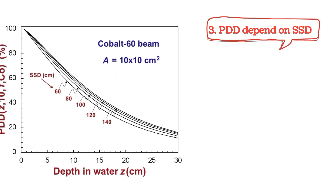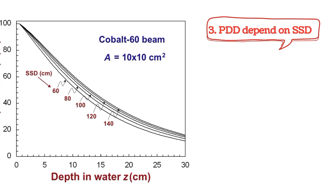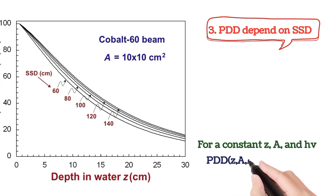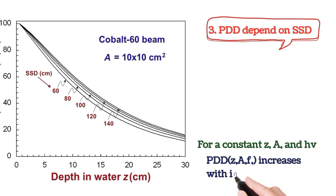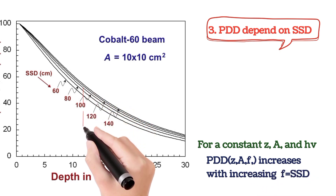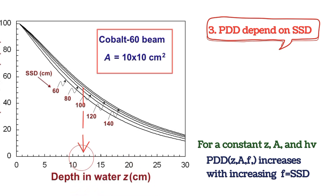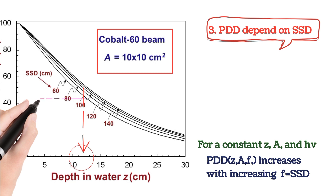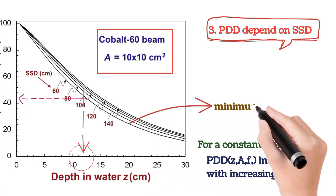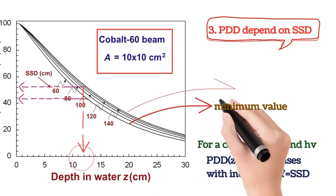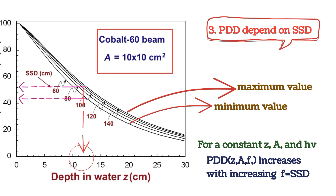We see how PDD depends on SSD. For a constant depth, field size, and energy, PDD increases with increasing SSD. At a constant depth, constant field size, and constant beam energy, smaller SSD has minimum PDD value and higher SSD has maximum value. PDD is directly proportional to the source-to-surface distance.